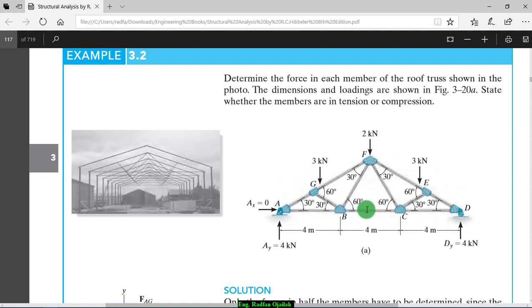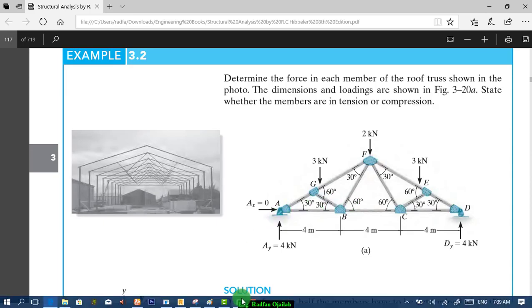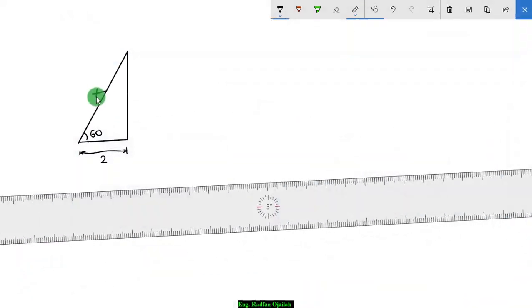This segment would be 2 meters and this angle is 60 degrees. We use the trigonometric functions to find the length of this segment. After calculation, its length will be 3.464 meters.